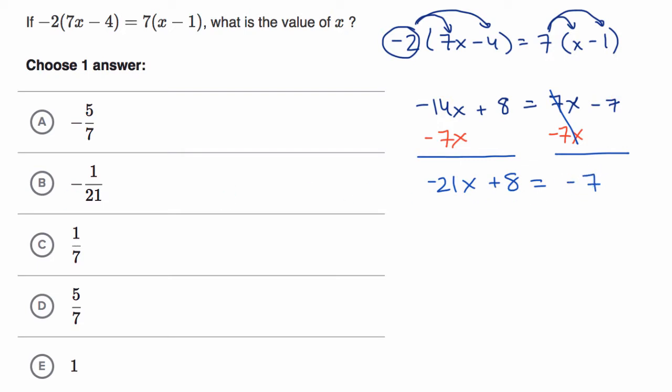And now we want to get rid of this positive eight on the left-hand side. We can subtract eight from the left, but if we do that, we have to subtract eight from the right as well. And so this is going to give us on the left-hand side, we have negative 21 x, these cancel out. That's equal to negative seven plus negative eight is negative 15.